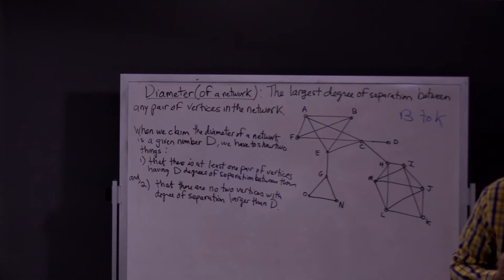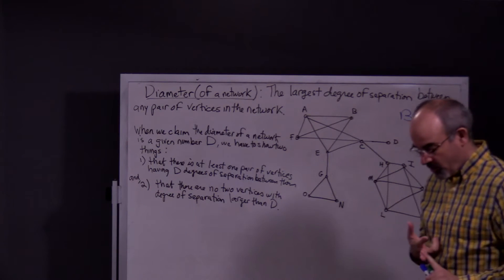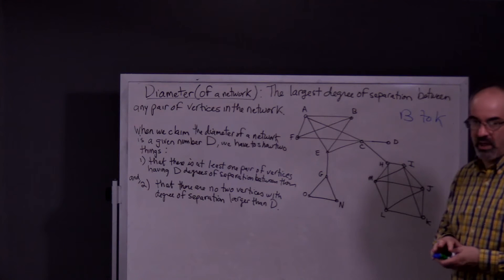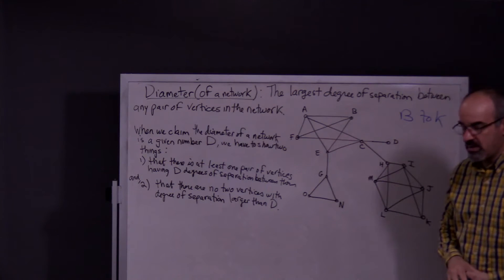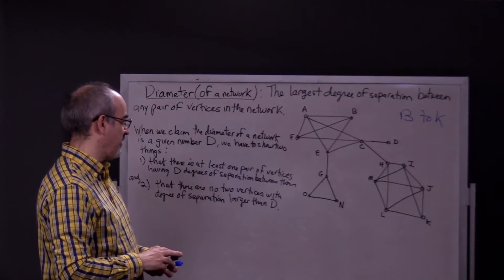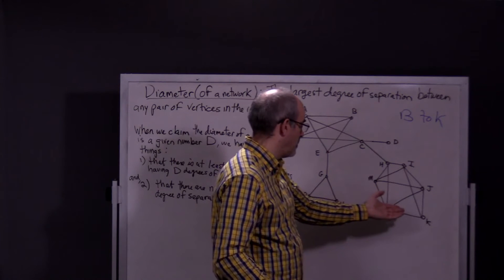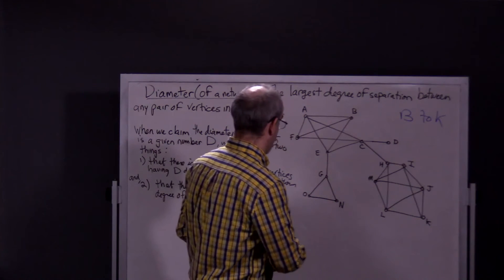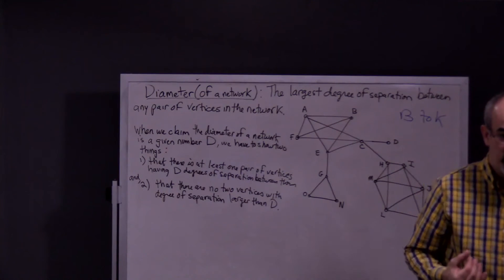At first we knew there was a pair with a degree of separation of three, but then we found one with four. So we knew three wasn't the diameter — the diameter is the largest degree of separation between any two vertices in the graph. Then we found one that was five, and now we just found one that was six. If you can find one with seven, that would be the diameter, but you can't. There are several pairs with a degree of separation of six — for example, N to K and O to K are both six — but there's none with seven.